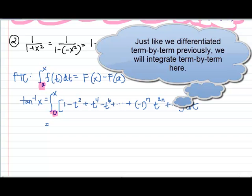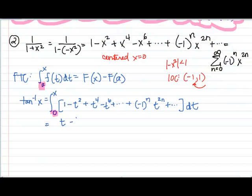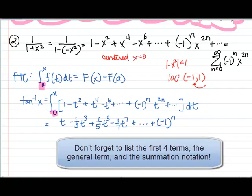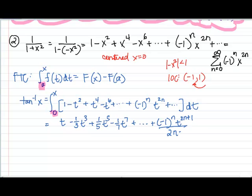Now I'm going to integrate term by term. The integral of 1 with respect to t is now a t. The integral of t squared is 1 third t cubed. Then 1 fifth t to the fifth, negative 1 seventh t to the seventh. Our pattern is x to the 2n plus 1 over 2n plus 1. This is a definite integral, so this still goes from 0 to x.